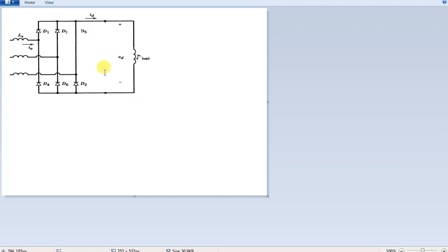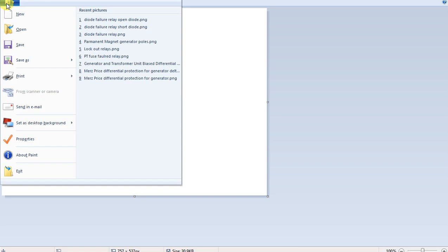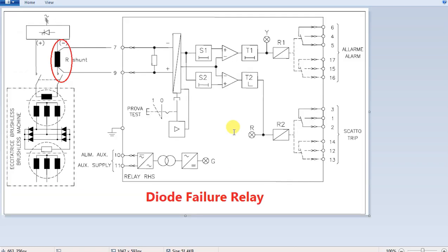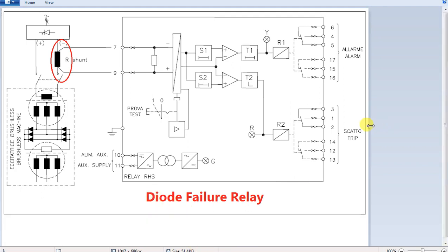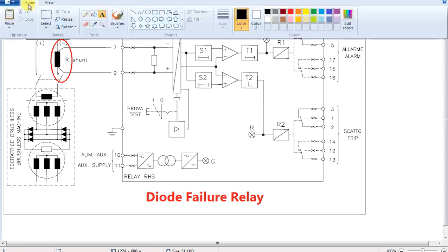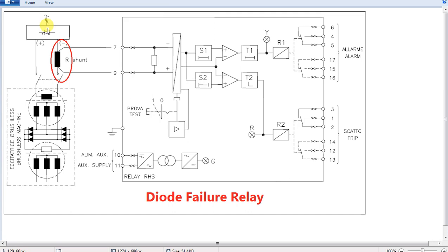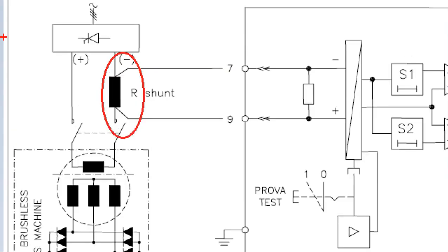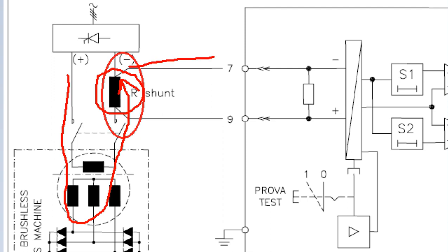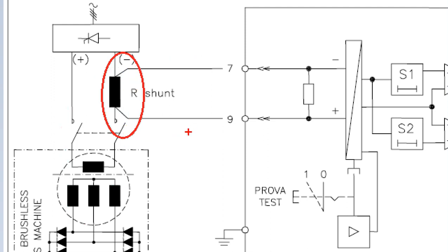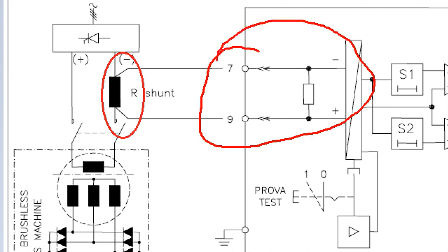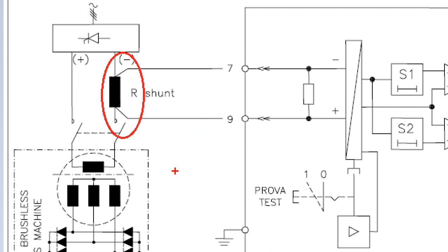Now check this out — we need some logic to detect the failure, whether it is a short-side or open diode failure. What is resistance? It is simple to apply Ohm's law. What is the current flow? What is the voltage drop? The voltage drop is a potential difference, and this potential difference is used in diode failure detection.